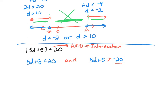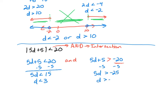I put 'and' in between the two inequalities and solve them out. Subtracting 5: 5d is less than 15, divide by 5, d is less than 3. On the other side, subtracting 5: 5d is greater than negative 25, divide by 5, d is greater than negative 5. So we have an and statement, and we're looking for the intersection of those two areas.